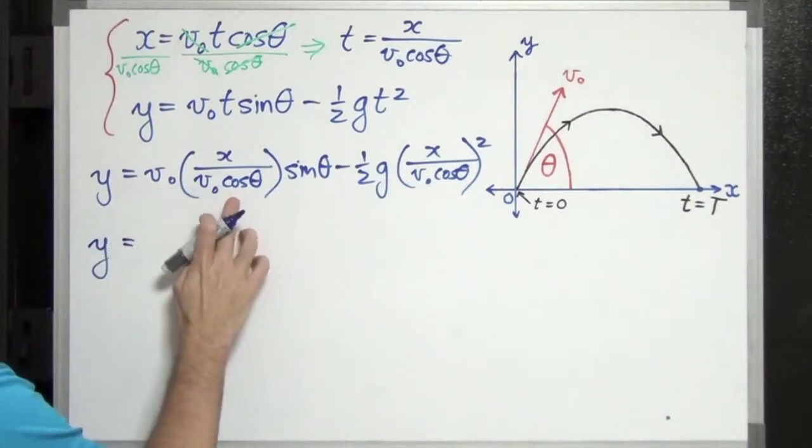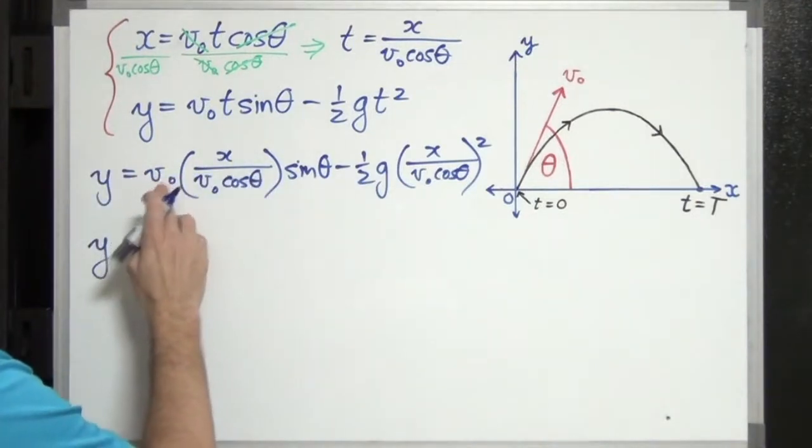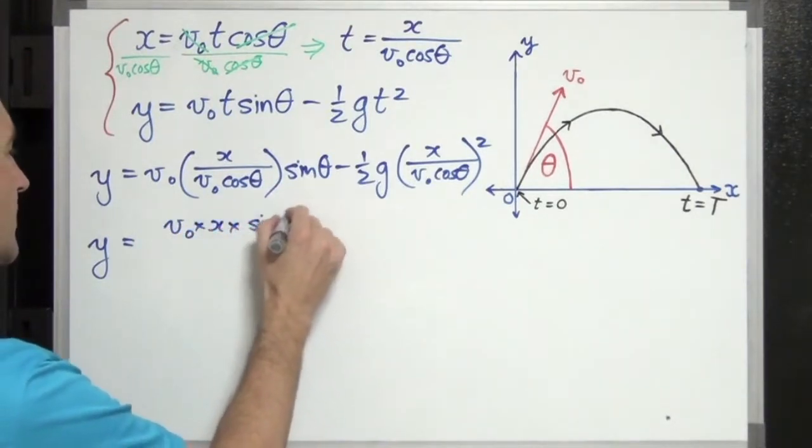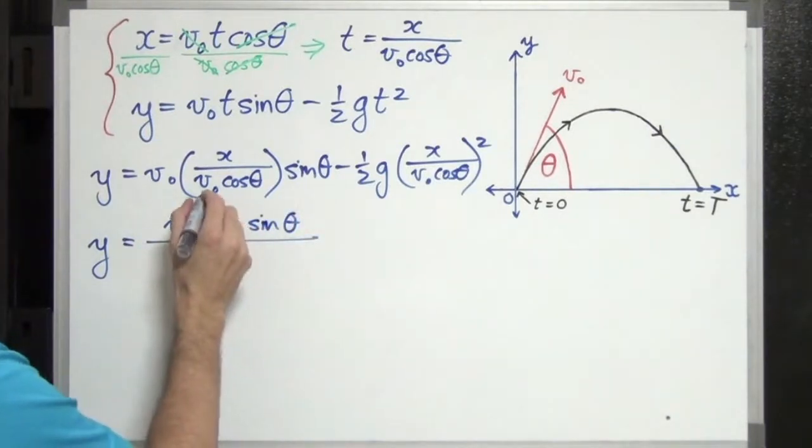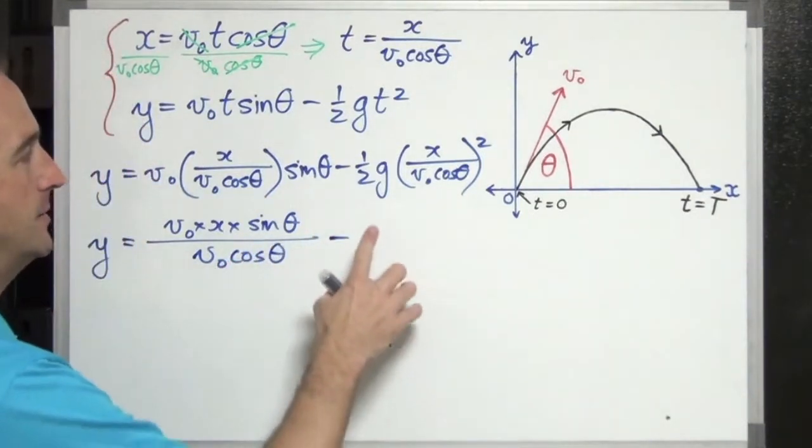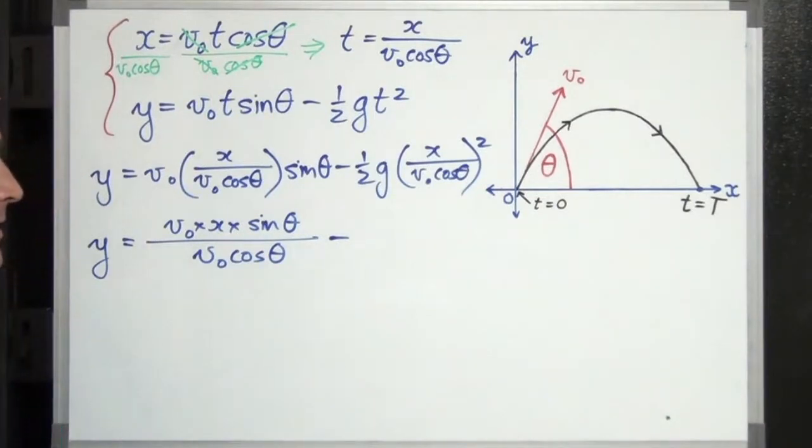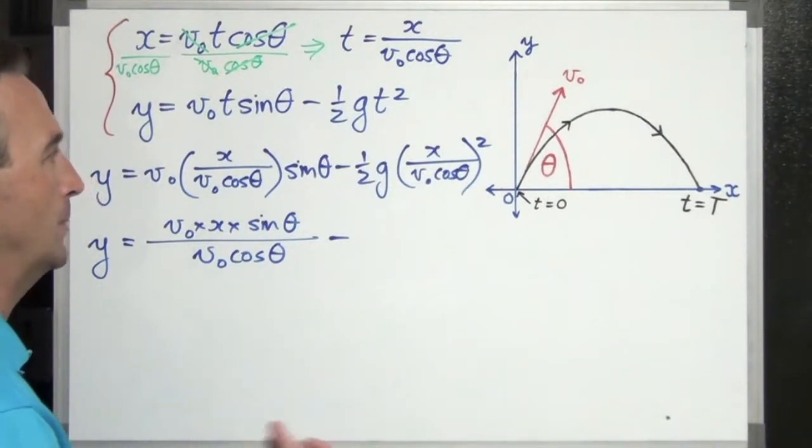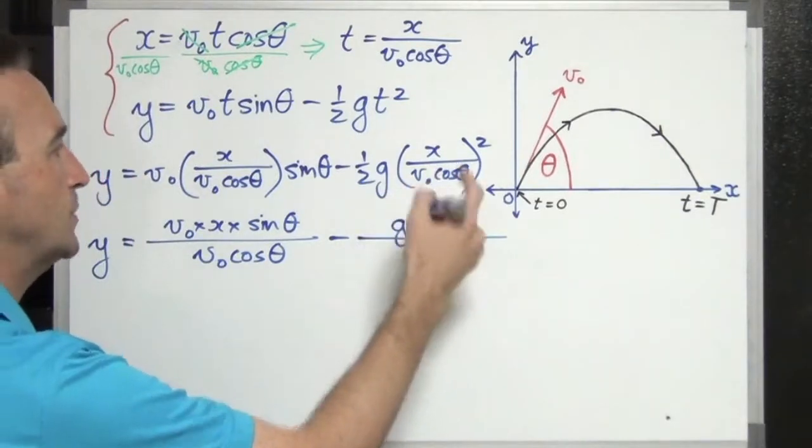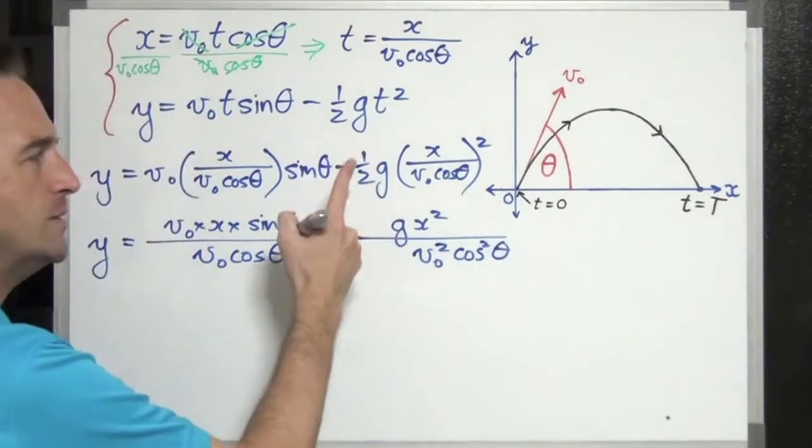So let's keep working on this. Y equals v naught times this mass times sine theta. So that's kind of like v naught over one, sine theta over one. Let's make this one fraction here. So v naught times x times sine theta on top, and on the bottom we've got v naught cos theta, minus, and over here as well let's try and make a single fraction. We've got one over two times this g is like g over one, and then all this stuff inside the brackets is going to get squared. So on top we're going to get g x squared, and on the bottom v naught squared cos squared theta. And always forget this 2. Don't forget that 2.